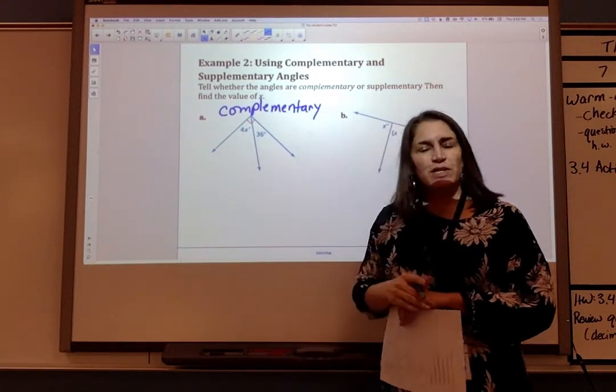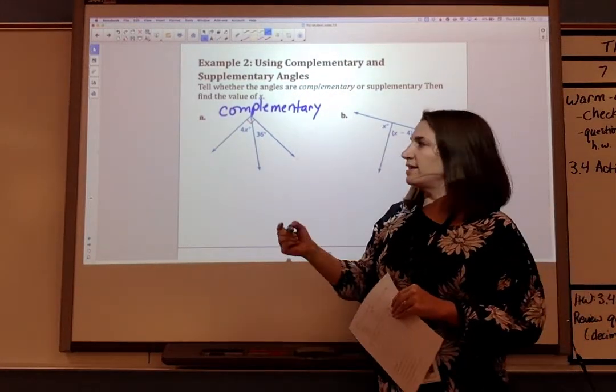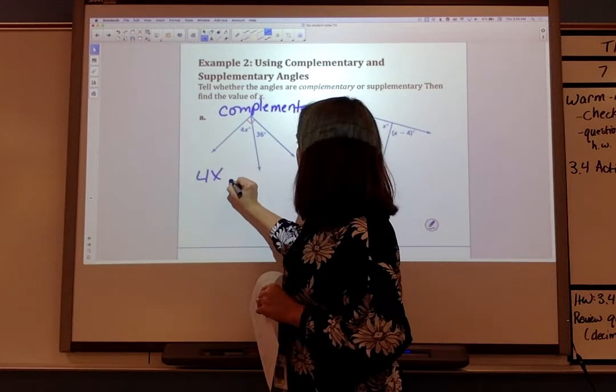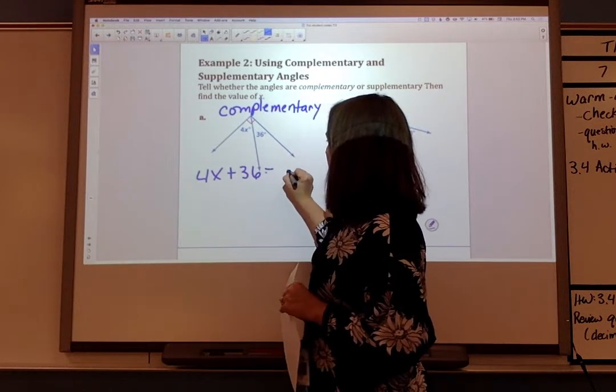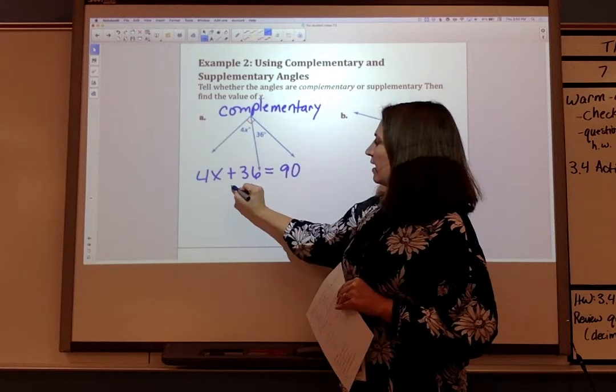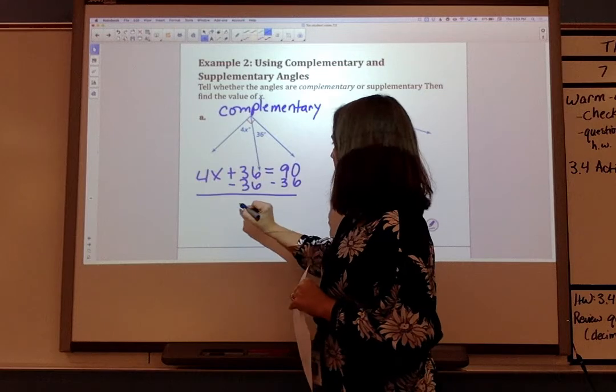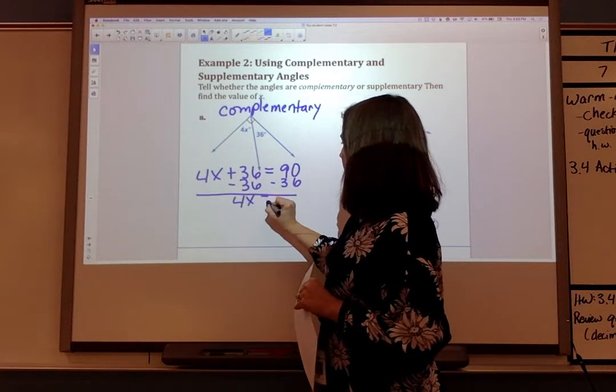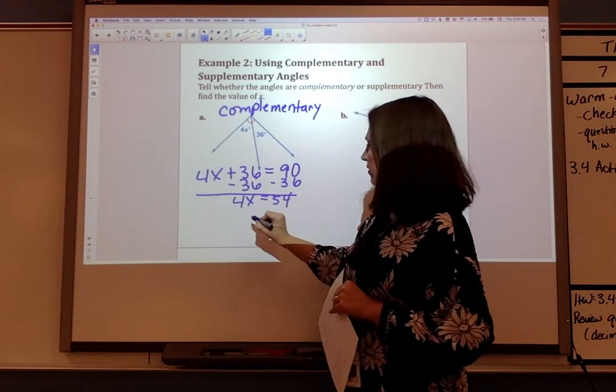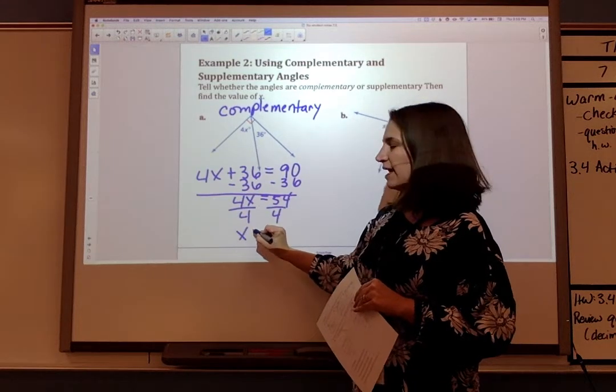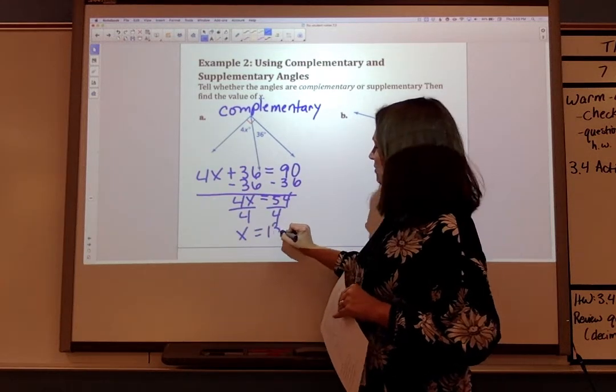And because we know that complementary angles add to 90 degrees, I can write an equation where 4X plus 36 equals 90. And I'll subtract 36 from both sides and get 4X equals 54. And then I'll divide by 4 on both sides and get X equals 13.5.